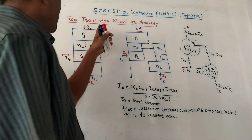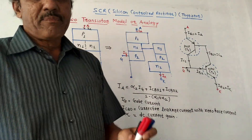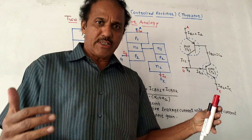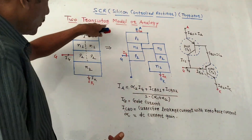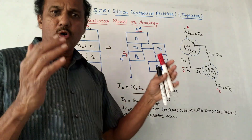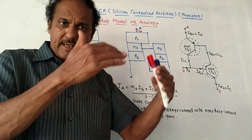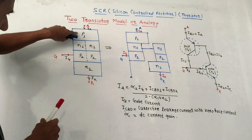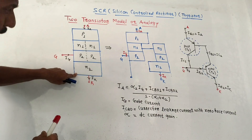The next part is the two-transistor model or analogy. From the exam point of view, we may expect a question like: explain the two-transistor model of SCR or thyristor. We have discussed that there are basically four layers: P, N, P, N.